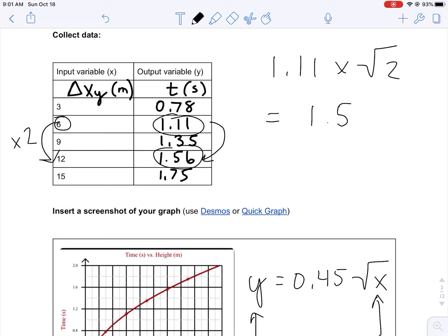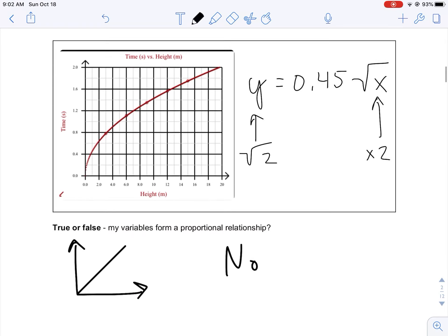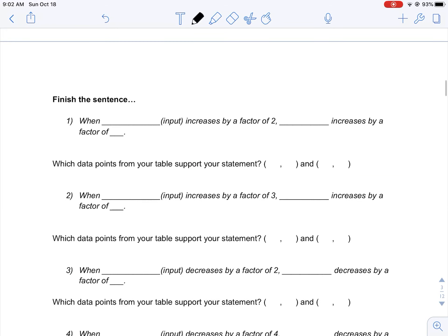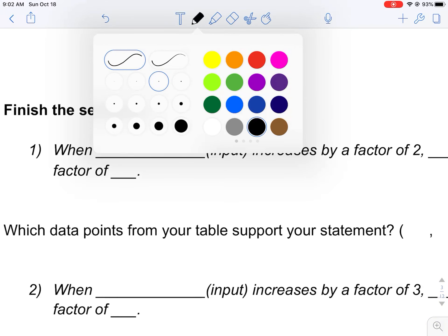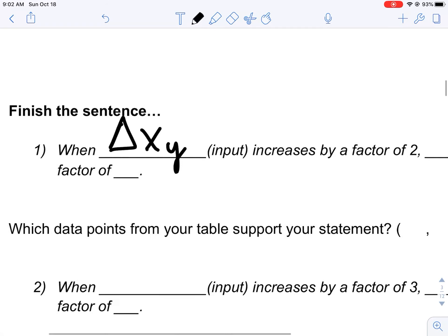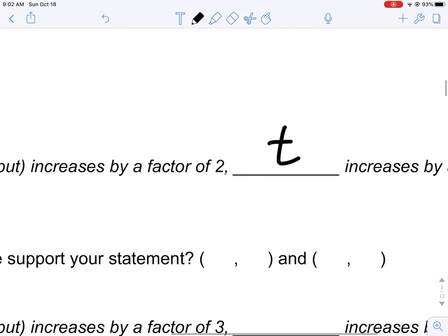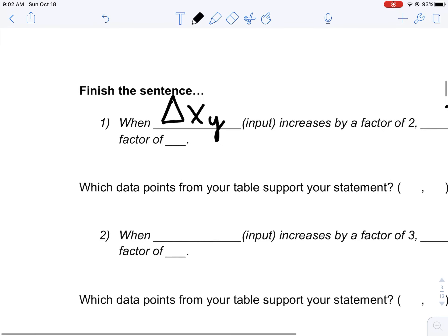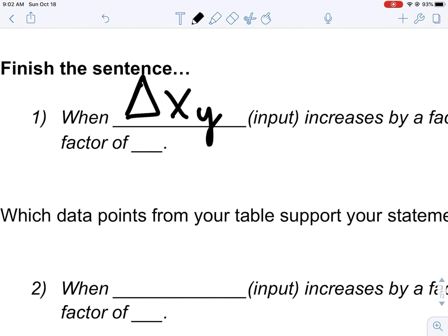1.57, which again is really really close. So what are we finding out? As our input increases by a factor of two, we can actually say when Δxy increases by a factor of two, the time doesn't also double but increases by a factor of—I ran out of space here—radical two.